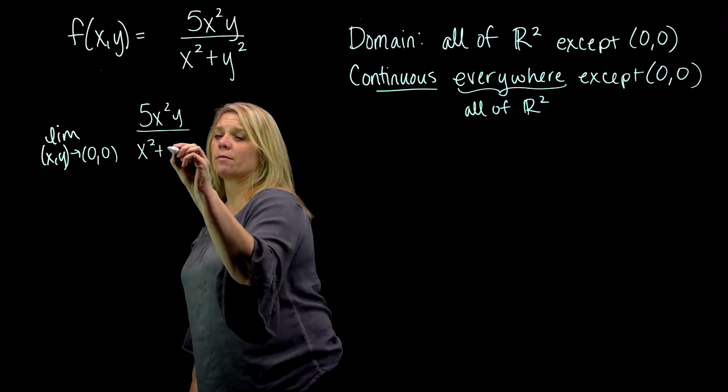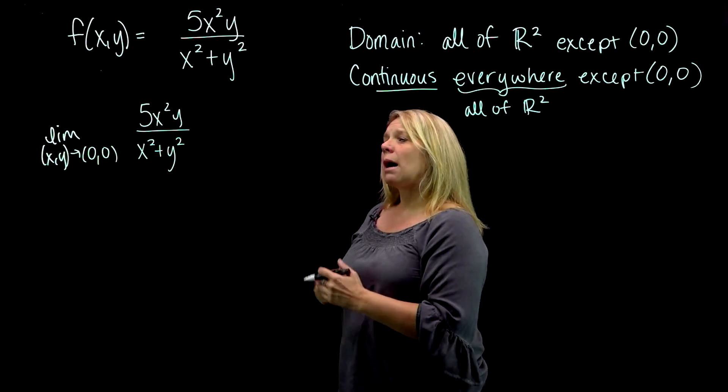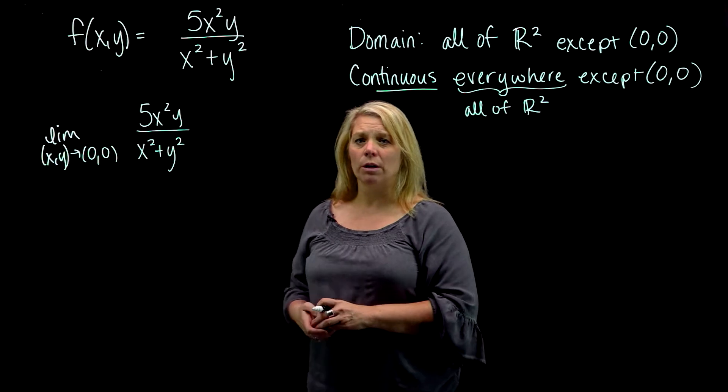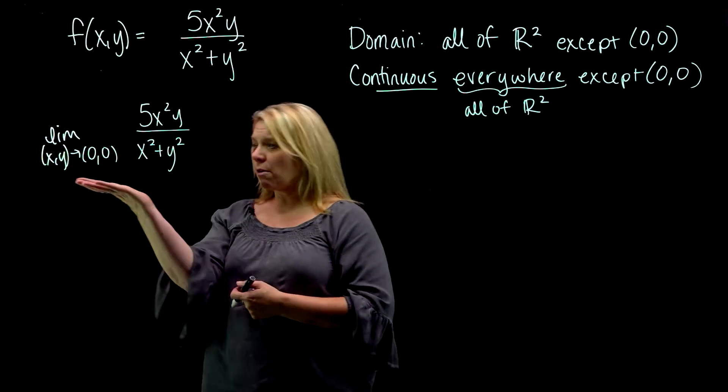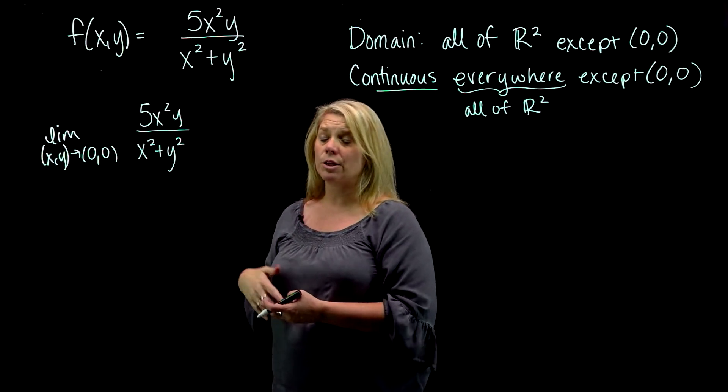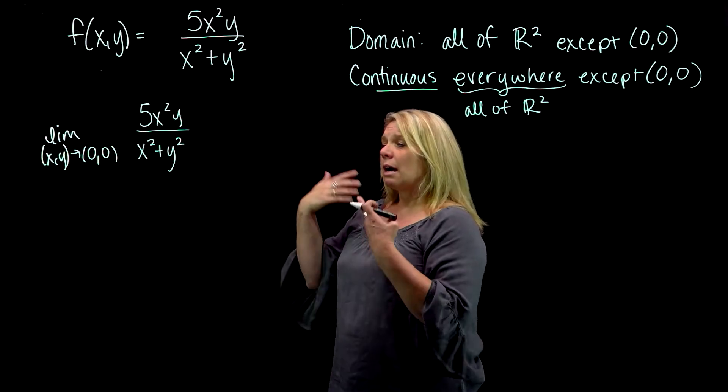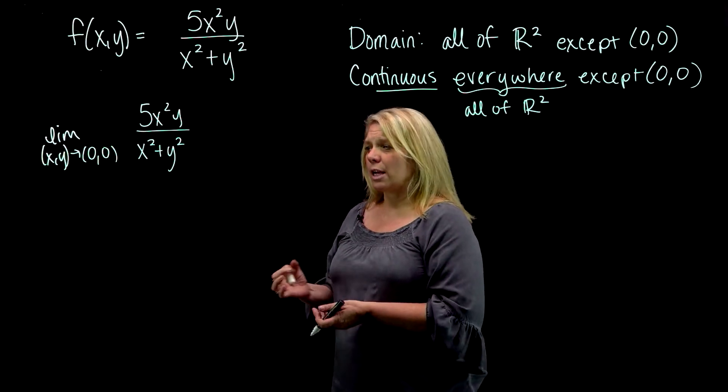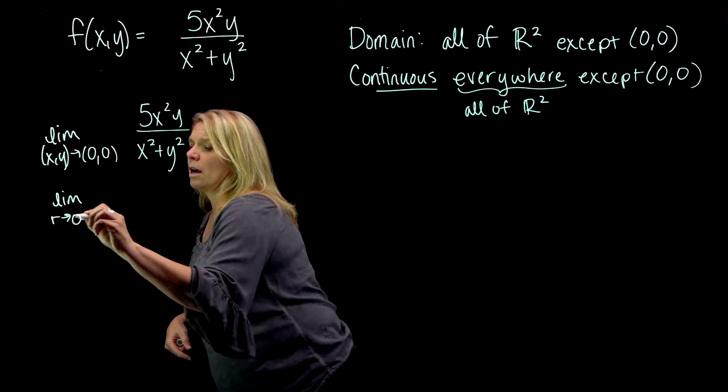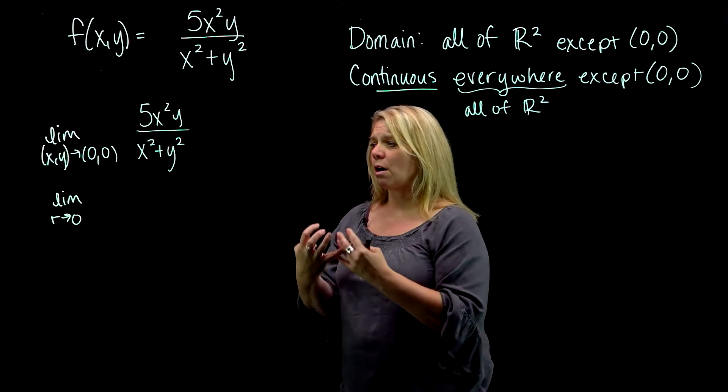We might look at a graph of this function to see if we think that this limit exists or not. But even if we didn't look at a graph, this problem is essentially screaming polar coordinates at you. You're approaching the origin. You've got the x² + y² here. So polar coordinates is a good strategy that could help you show that this limit exists or perhaps does not exist, depending on what happens after you make that change to polar coordinates. So instead of just letting (x,y) approach zero, we're going to let r approach zero. That would be from all directions.